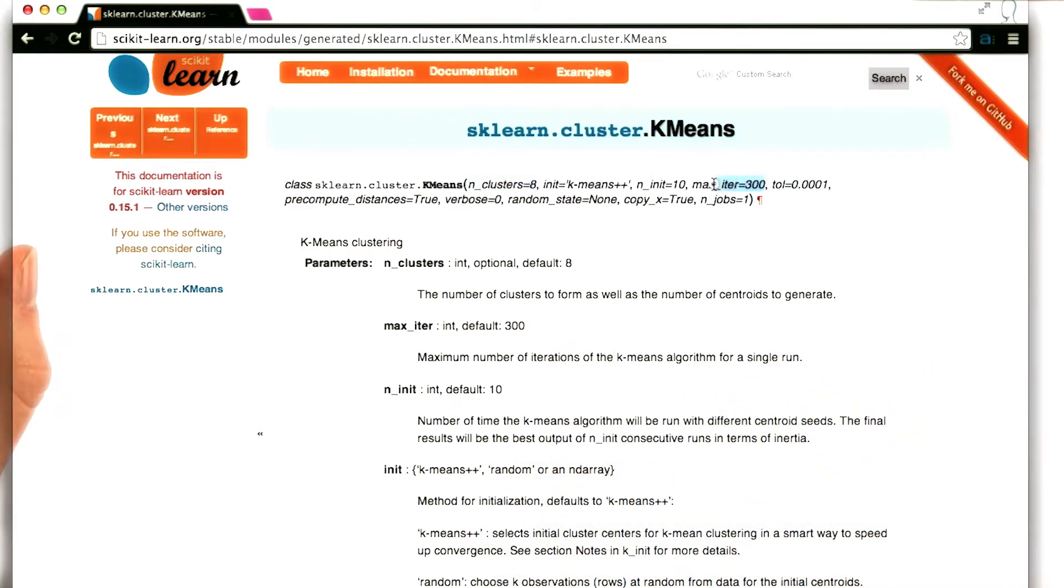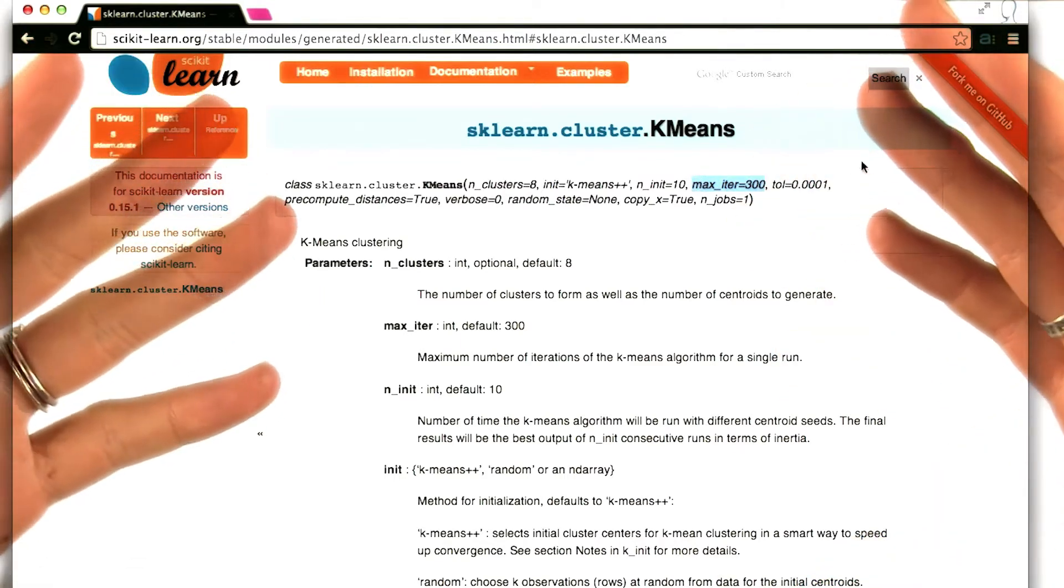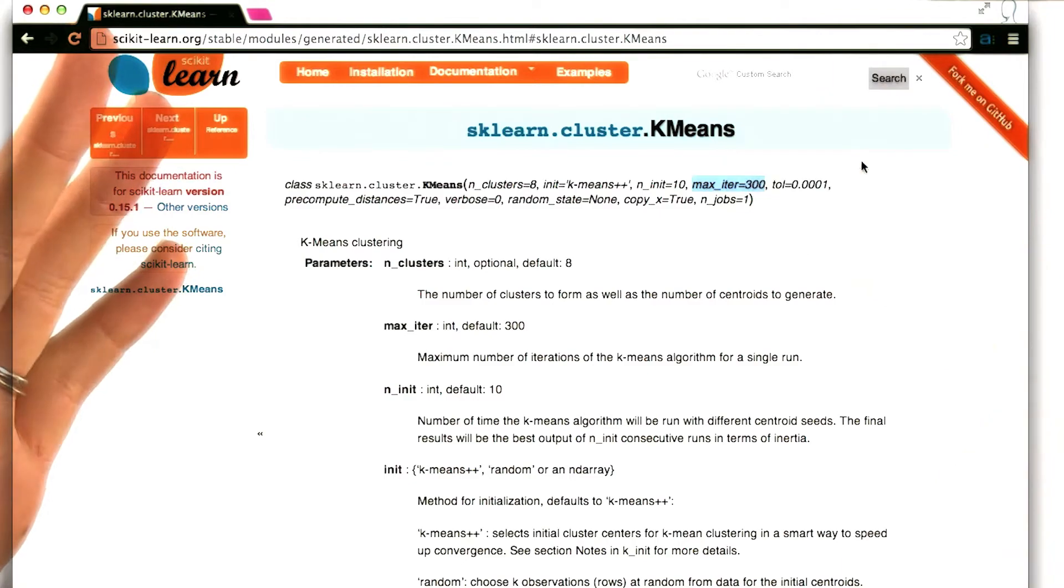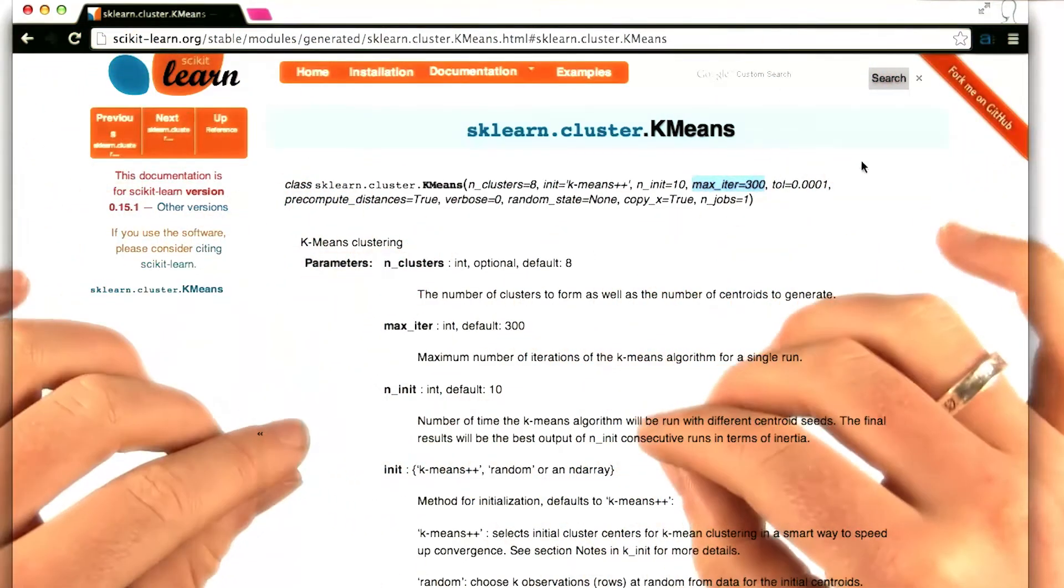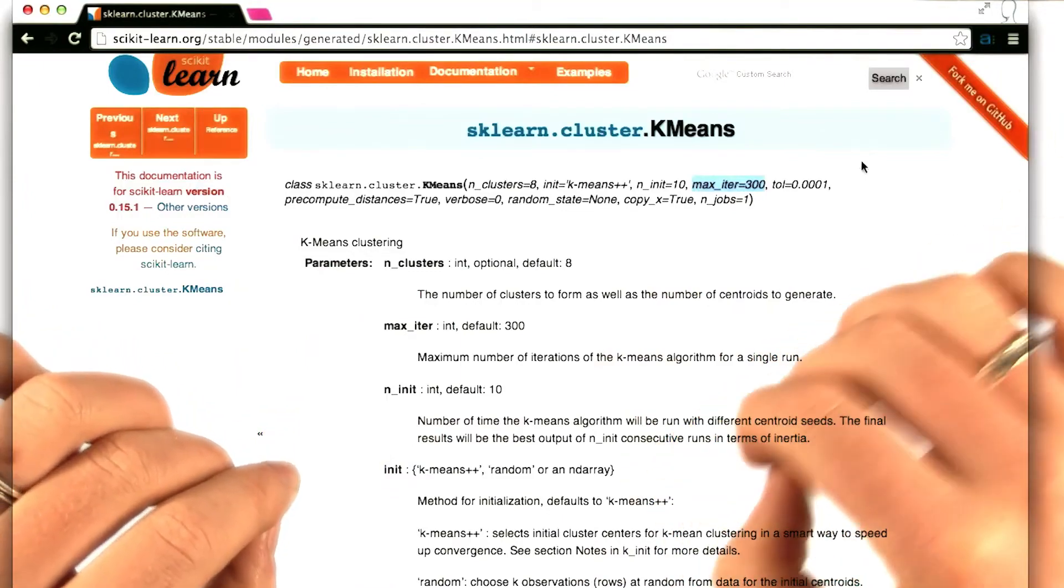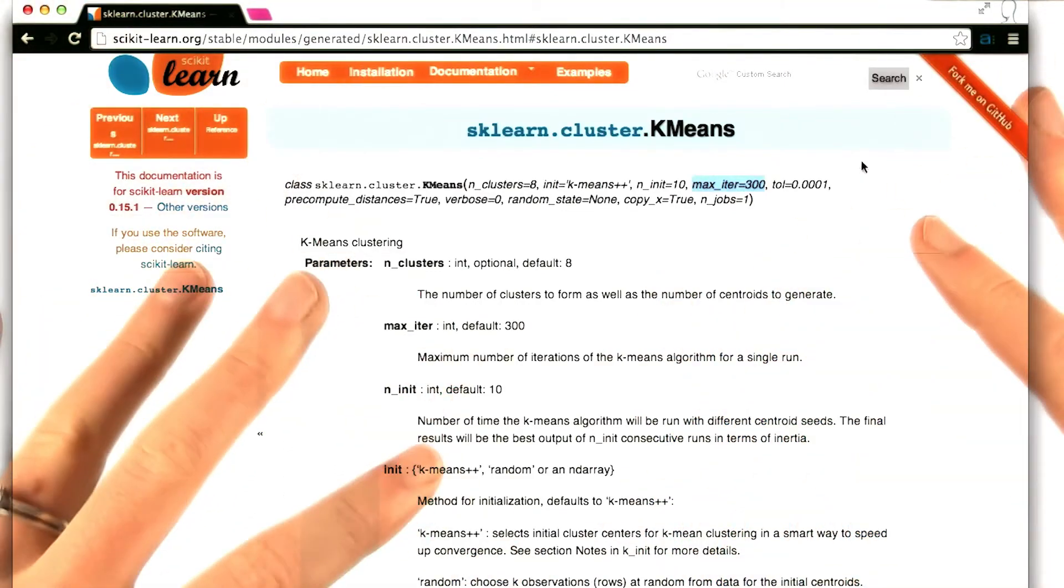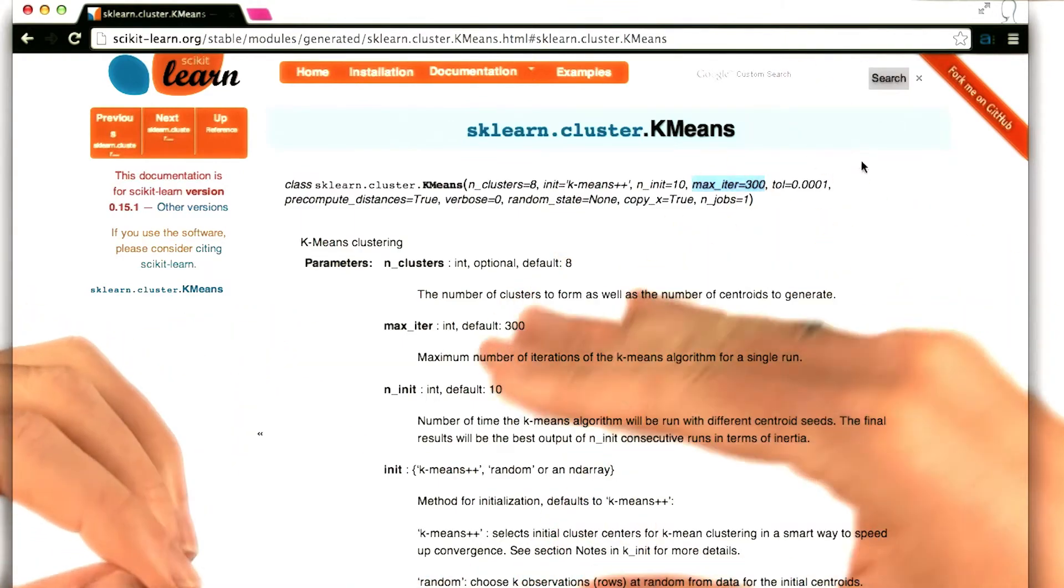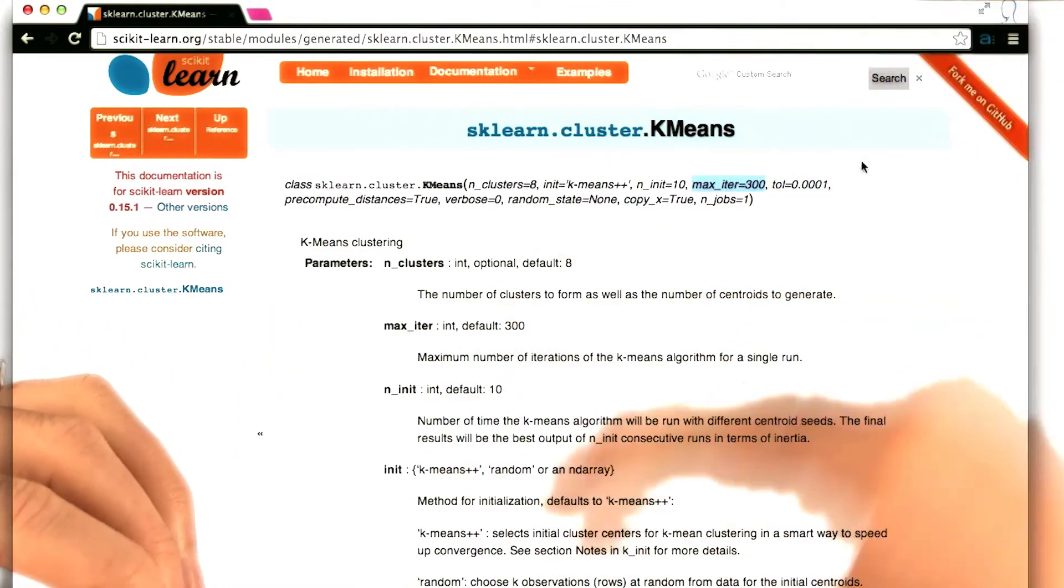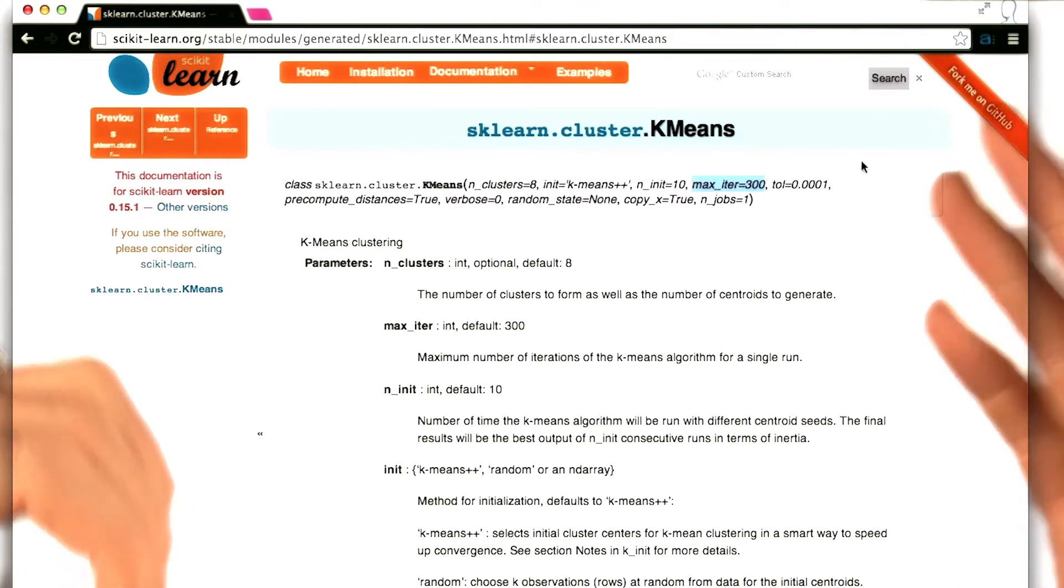The second parameter that I want to call your attention to is max_iter equals 300. Remember that when we're running K-means clustering, we have an iteration that we go through as we're finding the clusters, where we assign each point to a centroid and then we move the centroid. Then we assign the points again, we move the centroids again. And each one of those assign and move steps is an iteration of the algorithm.